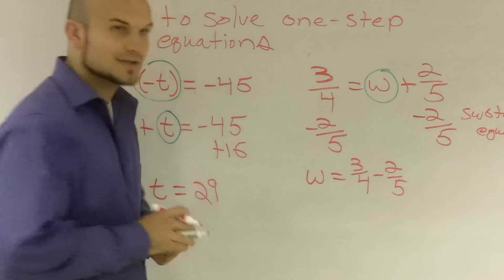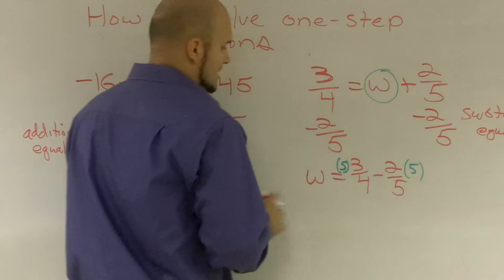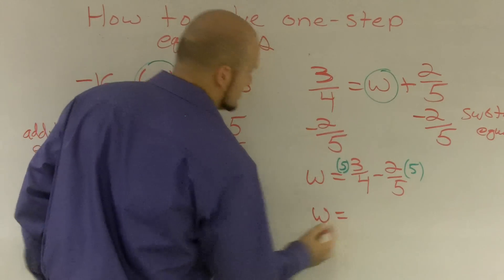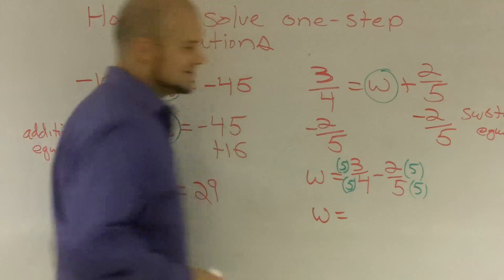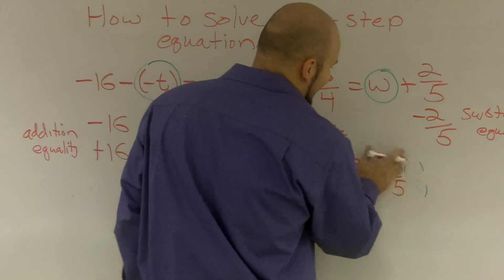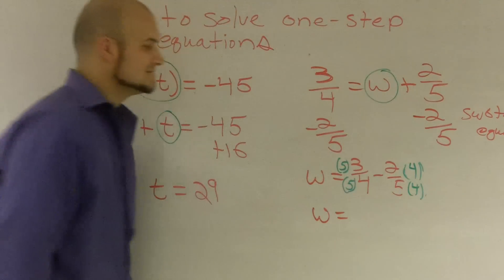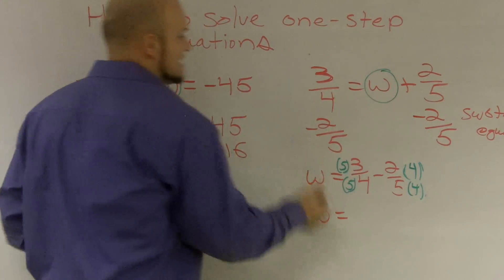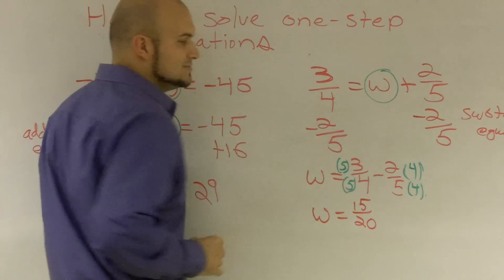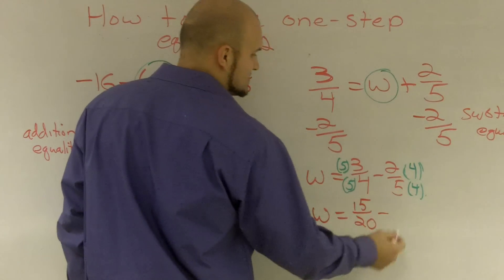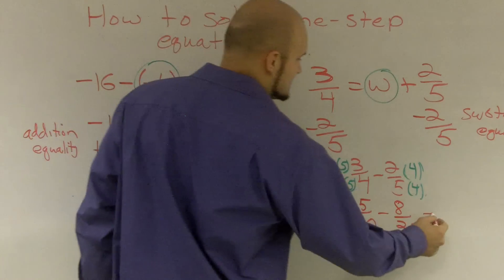So I look at my LCD, which is going to be 20. So I'm going to multiply by 5/5 and by 4/4. When I multiply 5 times 4, I'm going to get 20. 5 times 3 is going to become 15/20. And then minus 2 times 4 is 8, and 4 times 5 becomes 20. And then 15 minus 8 becomes 7/20.